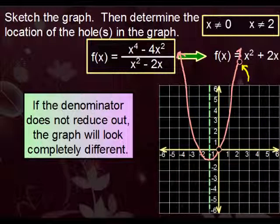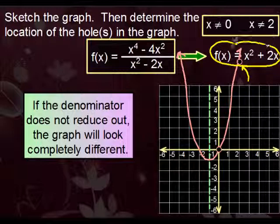Namely, this one. However, if the denominator did not reduce out, then what would happen is that the graph itself will not have holes right there. Instead, what you'll get are asymptotes. And the graph again looks completely different.